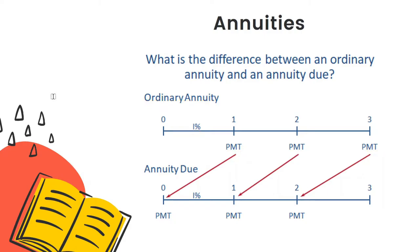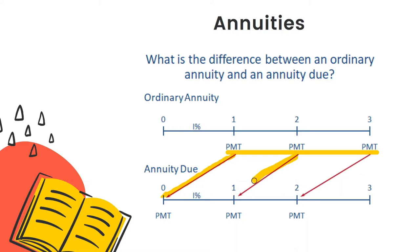For an annuity due, the first cash flow occurs at the beginning of each period, starting today. The next payment is at the end of the first year or beginning of year two, and the third payment is two years from now or the beginning of year three. To recap: for ordinary annuity, cash flow occurs at the end of each period. For annuity due, the first cash flow occurs at the beginning of the period — you move each payment one period earlier.